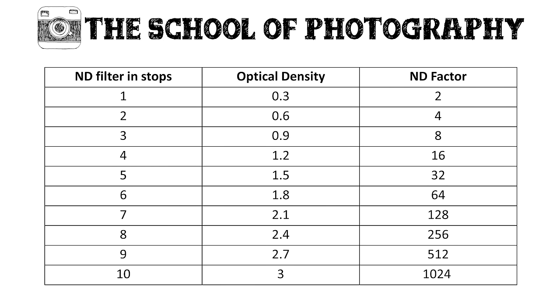Let's have a quick look at that table. Going to ND filter stops two, you can see it has an optical density of 0.6 or an ND factor of four. That's there for various technical reasons you don't really need to worry about, but my best advice is to just stick to the stops — how many stops does the ND filter have?